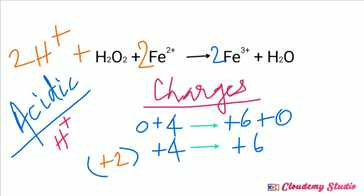Now when we check the hydrogen atoms on the left hand side: 2 hydrogen from hydrogen ions plus 2 hydrogen from hydrogen peroxide gives a total of 4 hydrogen atoms on the left hand side. But on the right hand side there are only 2 hydrogen atoms in water. Therefore, we need to add 1 mole of water molecule to the right hand side.